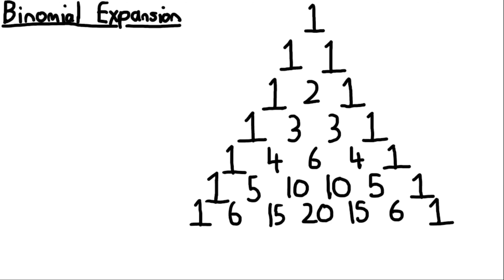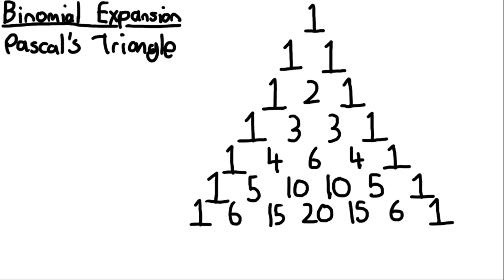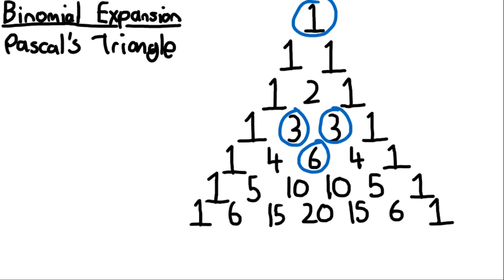This video is on binomial expansion. On the right is Pascal's triangle and you need to become familiar with how this works for this chapter. It starts from the one at the top, and each value below it is the sum of the two numbers directly above it. For example, six is made up of three plus three, the two numbers directly above it.